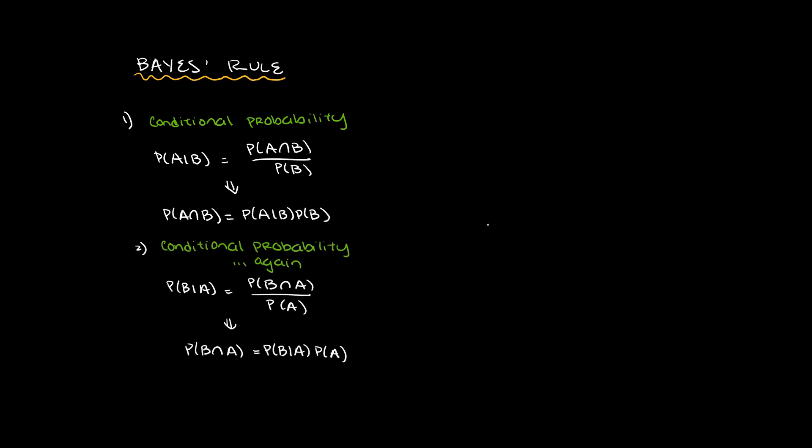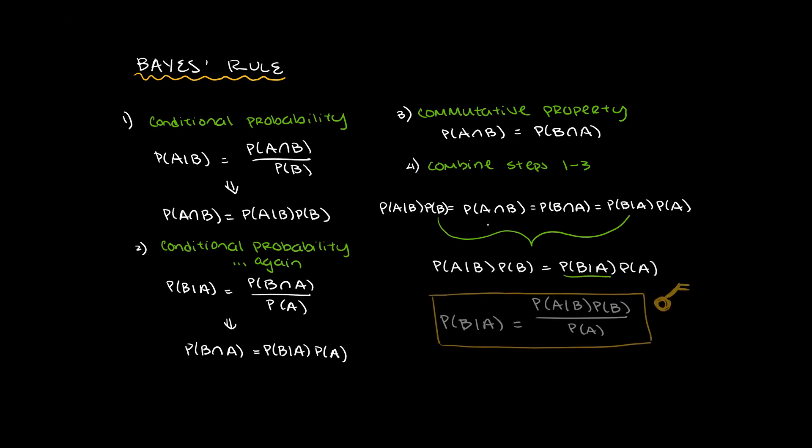But, how do we prove Bayes' rule? First, use the definition of conditional probability to get the probability of A given B and the probability of B given A. We know the intersection of A and B is the same as the intersection of B and A. So with some algebra, we can get a formula that links probability of A given B and probability of B given A.